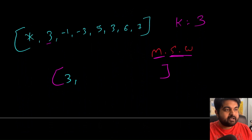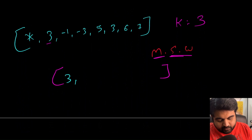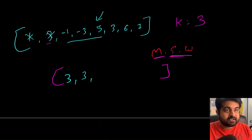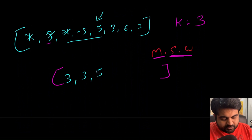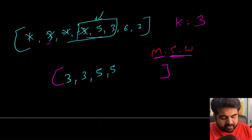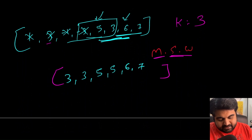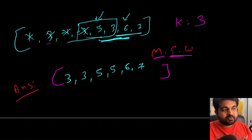We add value 3 to our answer. Next, one element gets eliminated and we have a new window — the maximum value is still 3, so we mark 3. Then for the next window, value 5 becomes the maximum, so we add 5. Same way we add 5 again for the following window. Then we get rid of another element and the new maximum is 6. Finally, the last window contains 7 as the maximum value. This is the answer we return to understand the maximum sliding window.